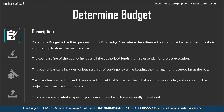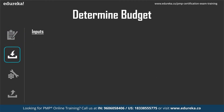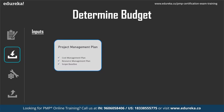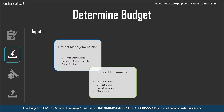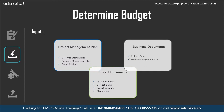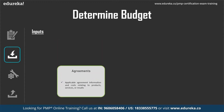The cost baseline is authorized — it is an authorized, time-phased budget used as the initial point for monitoring and calculating project performance and progress through earned value management. Inputs to determine budget include the project management plan (cost management plan, resource management plan, scope baseline), project documents (basis of estimates, cost estimates, project schedule, risk register), business documents (business case, benefits management plan), and agreements with suppliers or customers.